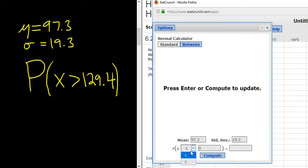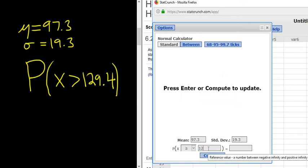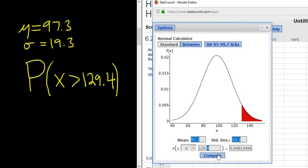And then it's greater than. So greater than is the same as greater than or equal to for the normal distribution, it does not matter. So everything looks okay. Let's see, 97.3, 19.3, greater than or equal to 129.4. Compute.